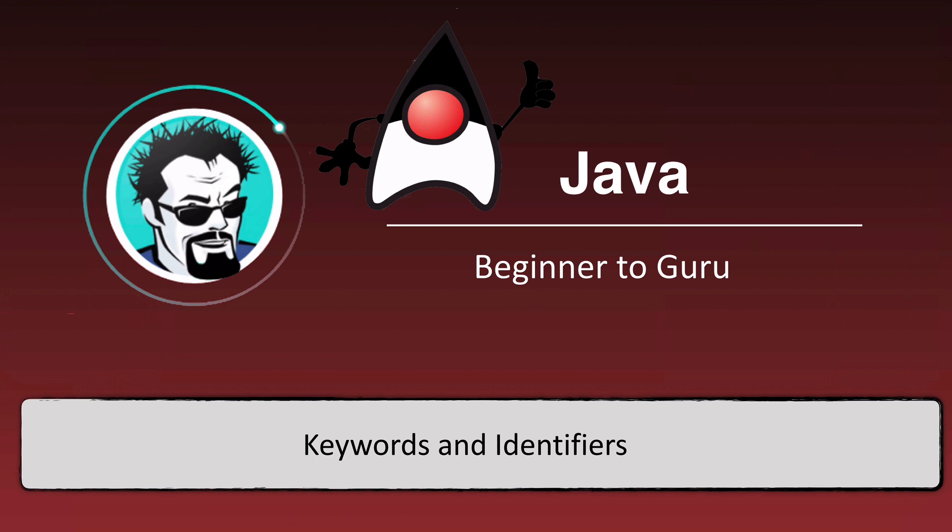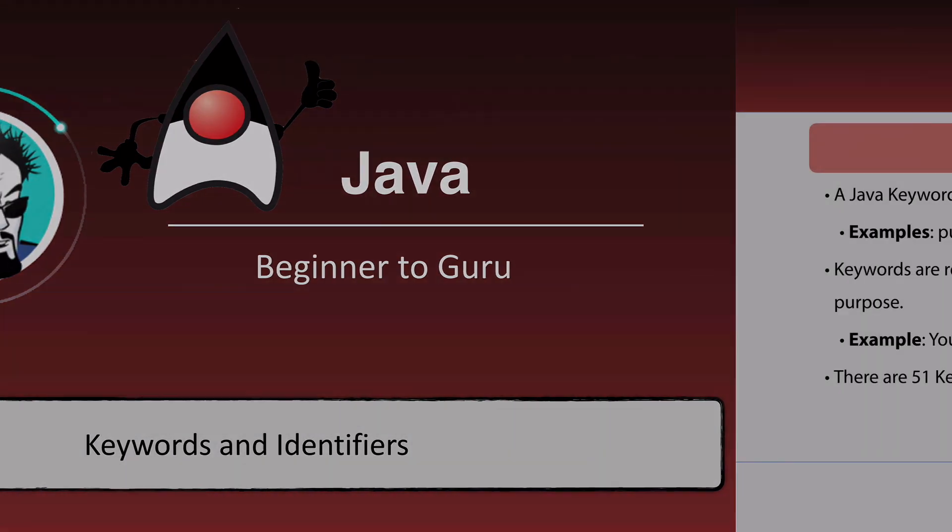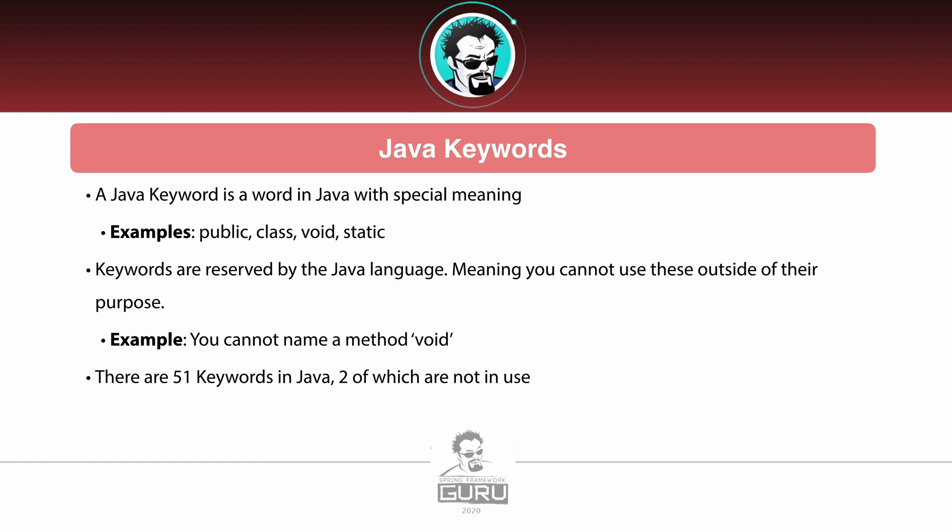In this video we're going to talk about Java keywords and identifiers. A Java keyword is a word in Java that has some type of special meaning to the language. We've already seen some examples such as public, class, void, and static. These are all terms that have special meaning and a special place inside of the programming language syntax.